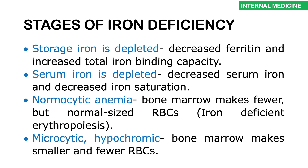As the body lacks iron, it creates more transferrin molecules to mobilize what's left, so the total iron binding capacity (TIBC) increases. Eventually serum iron also depletes, and the iron saturation decreases — because even though more transferrin molecules are being made, they aren't bound to iron. There will initially be a normocytic anemia, as the bone marrow makes fewer but normal-sized red blood cells, then iron-deficient erythropoiesis produces fewer and smaller cells — resulting in microcytic hypochromic anemia.